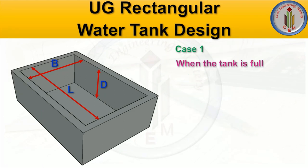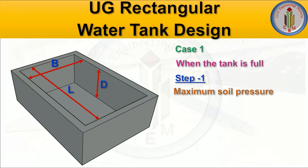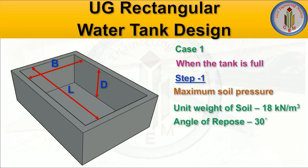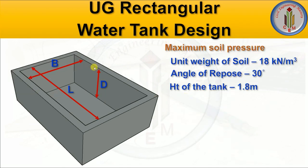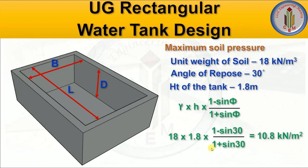First, let us start with Case 1 — when the tank is full. We need to find the maximum soil pressure using the formula: γ·h · (1 − sin φ) / (1 + sin φ). Unit weight of soil is 18 kN/m³, angle of repose is 30°, and height of the tank is 1.8 m. Applying these values: 18 × 1.8 × (1 − sin30°) / (1 + sin30°) gives us 10.8 kN/m² as the maximum soil pressure.